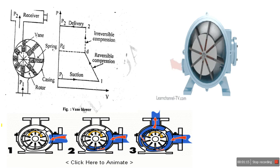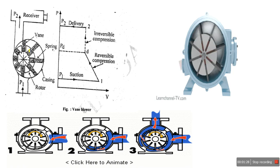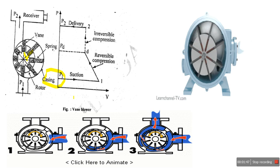The vane compressor consists of a rotor located eccentrically in a cylindrical outer casing. The rotor is provided with vanes, and those vanes are spring-loaded and placed in slots of the rotor. The rotor carries a set of spring-loaded vanes in its slots.